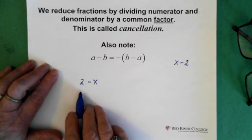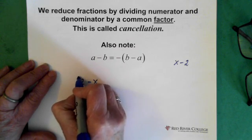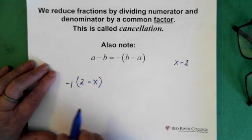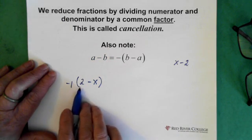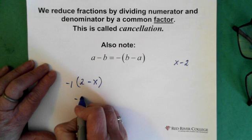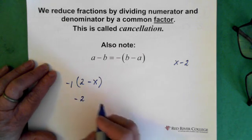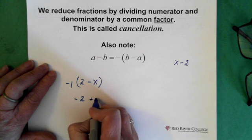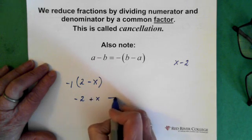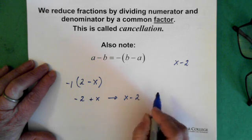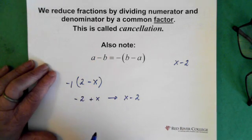What I do is I multiply this entire thing by minus 1. When I take the minus 1, multiply it by the 2, that gives me minus 2. The minus 1 times the minus x gives me a plus x. So we end up with x minus 2, basically the inverse of this.